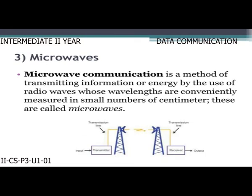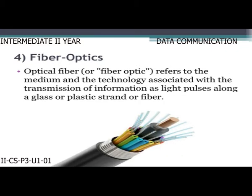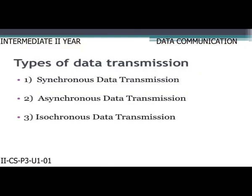Third, microwaves: microwave communication is a method of transmitting information or energy by the use of radio waves whose wavelengths are measured in small numbers of centimeters. Fourth, fiber optics: optical fiber refers to the medium and technology associated with the transmission of information as light pulses along a glass or plastic strand or fiber.